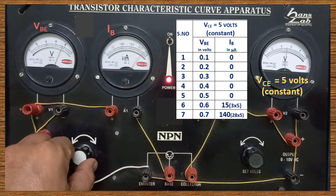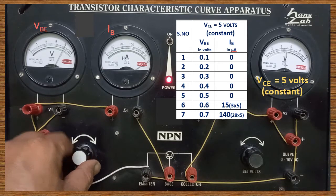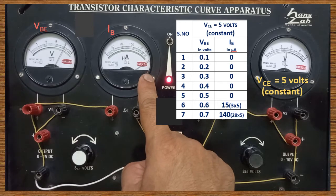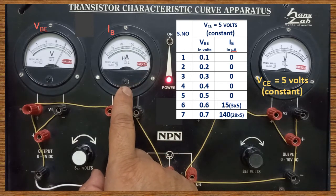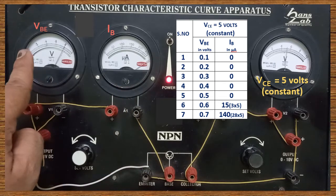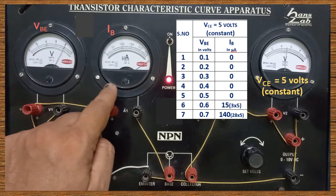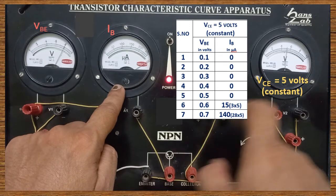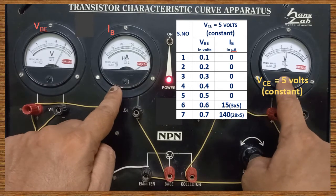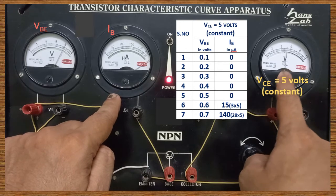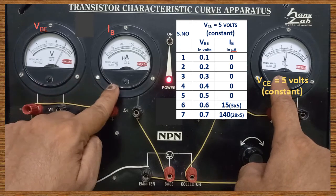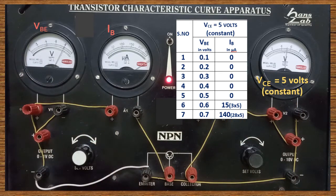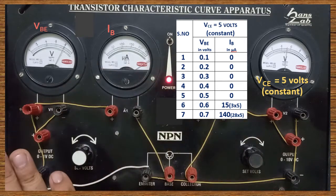Now VBE is increased from 0.7 to 0.8 volt. If increased to 0.8 volt, the pointer goes beyond the scale, so you need not take that value. To summarize: VBE was varied, IB was noted, and VCE was kept constant. This is the method of taking readings for the input characteristics of the NPN transistor.